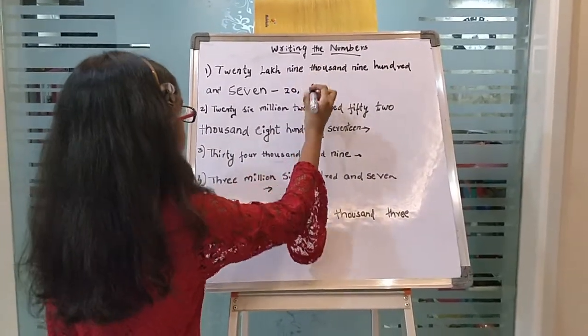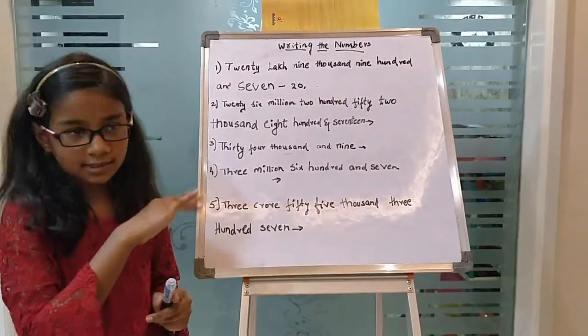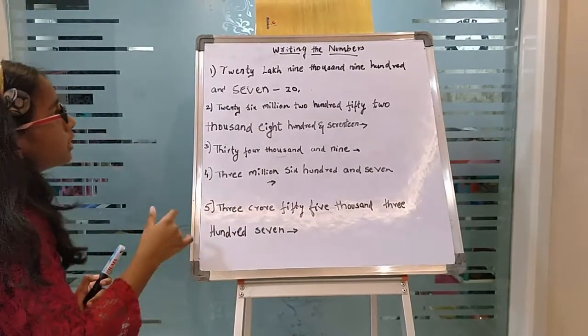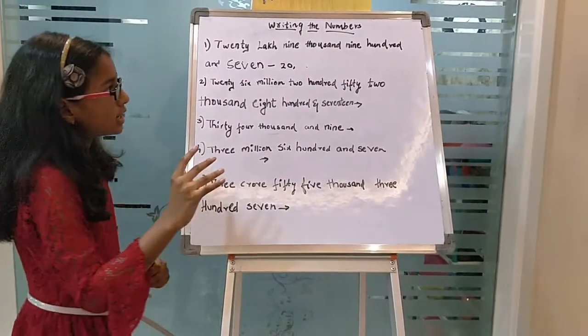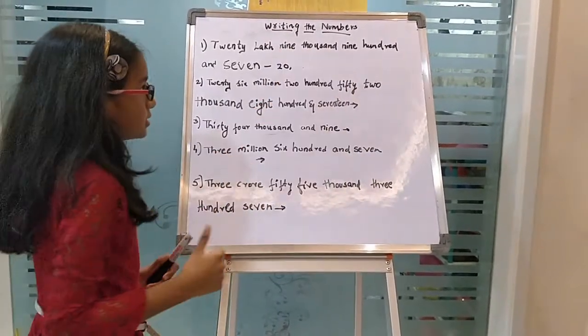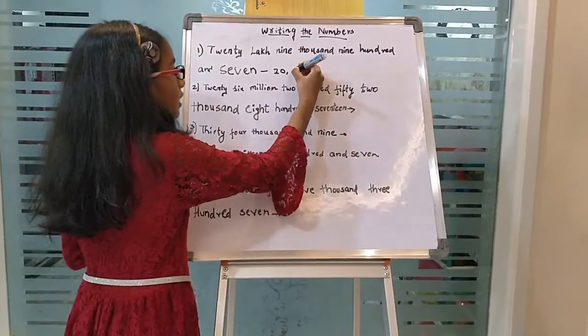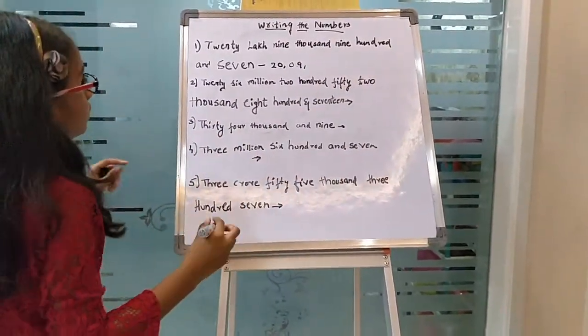There are 9000 here. Normally it's in the Indian system. In the Indian system, there are only two digits - thousands and ten thousands in the thousands period. But there are no ten thousands, so we should just keep 0 and write 9 in the thousands place.